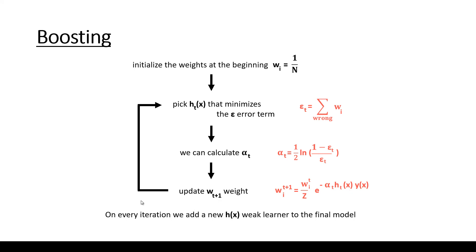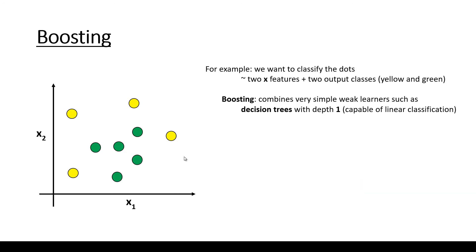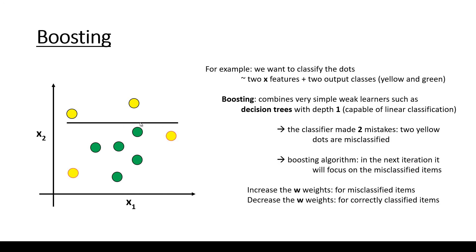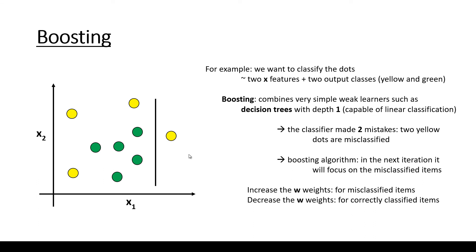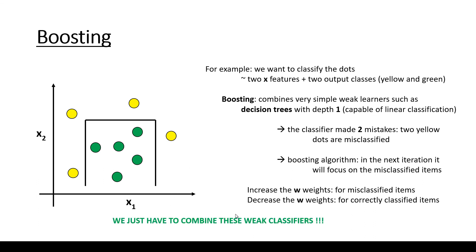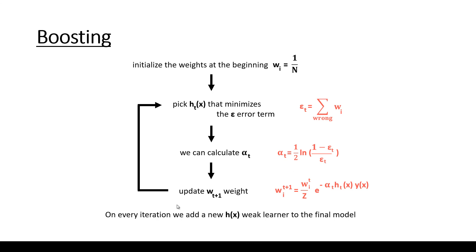On every iteration we add a new h(x) weak learner to the final model. In the first iteration we use the first weak learner, then in each subsequent iteration we add another, and finally we combine these weak classifiers to end up with a strong classification algorithm. Basically, we iterate to update the error value, the alpha value, and the weight value.